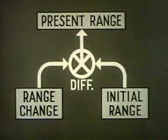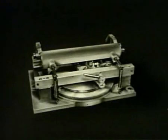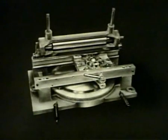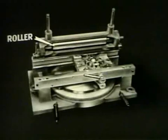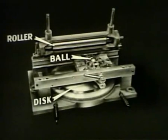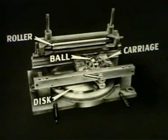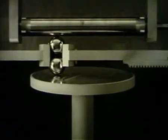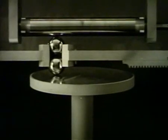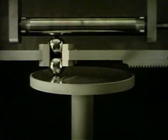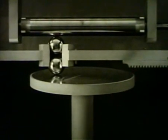Keeping the problem in mind, let's turn now to the mechanism itself. With the top raised, you see most of the basic parts: a roller, a disc, and a ball. There's another ball alongside this one, and both are held in a carriage. These parts are shown here in schematic form to demonstrate operating principles. There are two inputs.